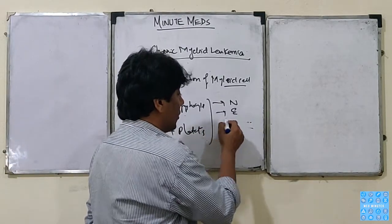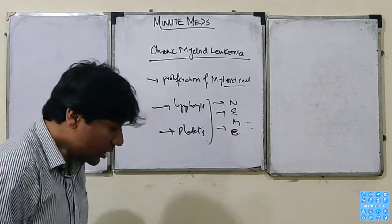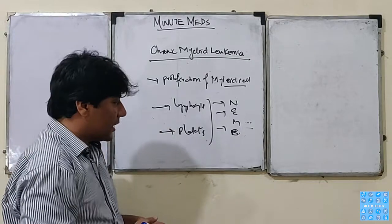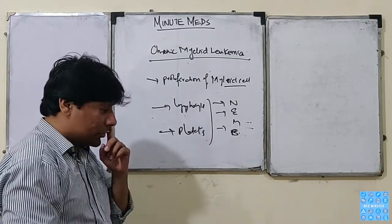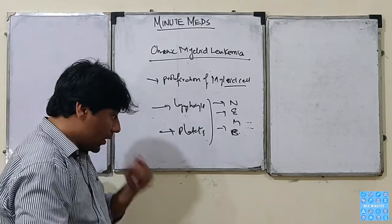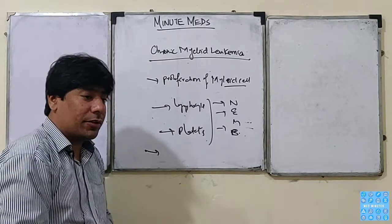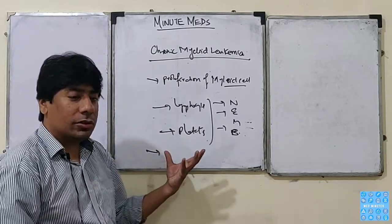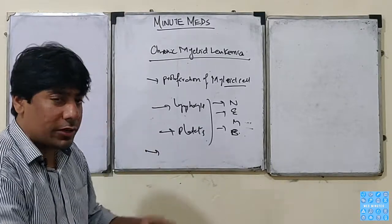These myeloid cells are increased but they are non-functional and abnormal. Chronic patients don't function the way they should. That's why the bone marrow develops pressure, and when we look at the patient, they have anemia — we will get to that.